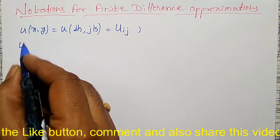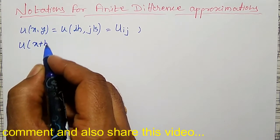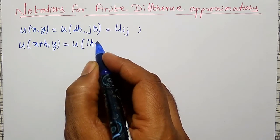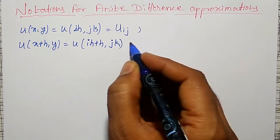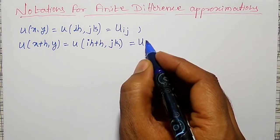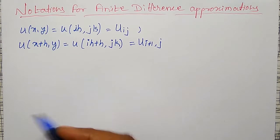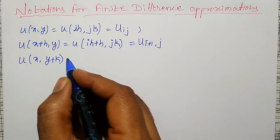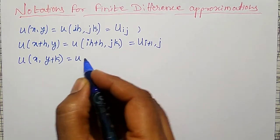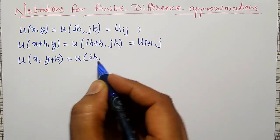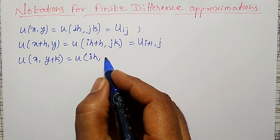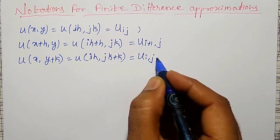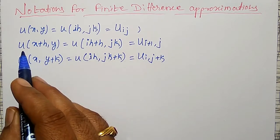Our u of x plus h comma y will become u of i·h plus h comma j·k, that is nothing but u_{i+1, j}. Similarly, u of x comma y plus k is nothing but u_{i, j+1}. Similarly, for minus, the previous direction also.